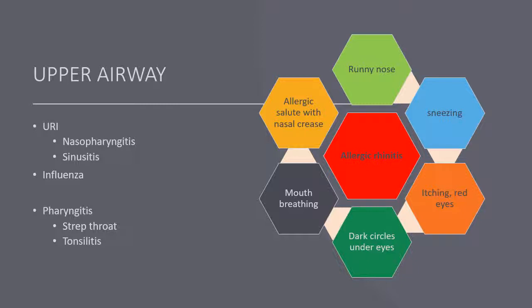Pharyngitis is a sore throat and should be evaluated for bacterial infection. Strep pharyngitis is often treated with antibiotics to avoid potential complications like rheumatic fever or glomerulonephritis. Tonsillitis is a common finding in children as well, so monitor the airway and the ability to swallow carefully. Treat the infection if it's bacterial and also treat the pain and the fever.